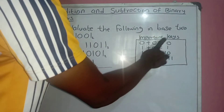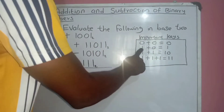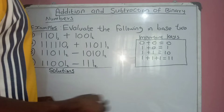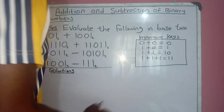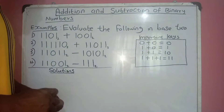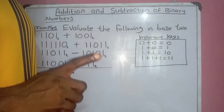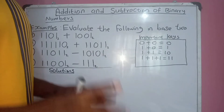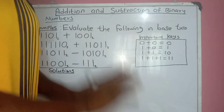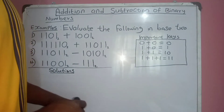The keys are as follows: 0 plus 0 is 0. 1 plus 0 is 1, as we know. But 1 plus 1 is not 2. In binary numbers — base 2 — this key is specially meant for base 2 only.